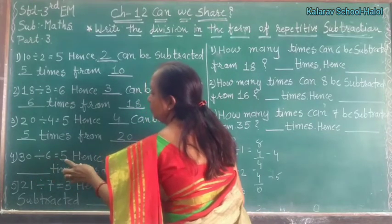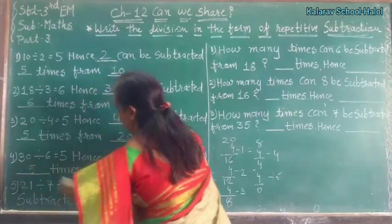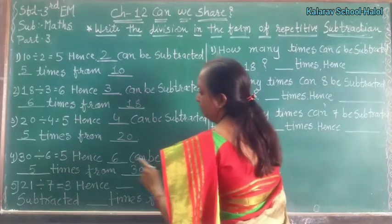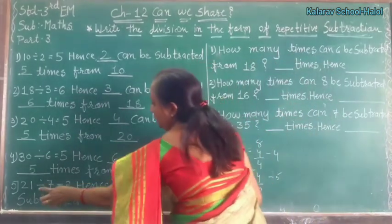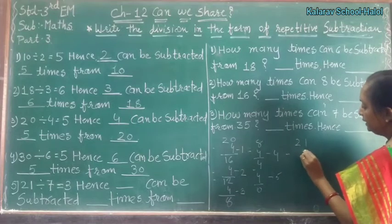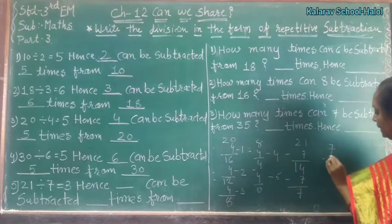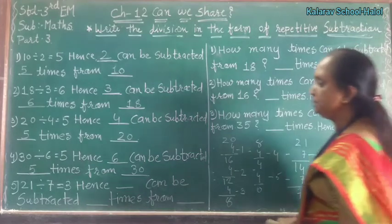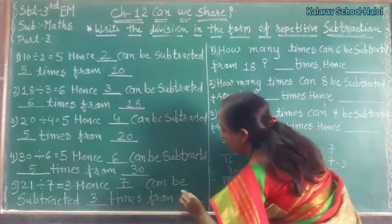Now do this directly: 30 divided by 6 is equal to 5, means 6 can be subtracted 5 times from 30. Now, 21 divided by 7 is equal to 3. 21 minus 7 is 14, 14 minus 7 is 7, and 7 minus 7 is 0. How many times? 1 time, 2 times, and 3 times. Hence, 7 can be subtracted 3 times from 21.